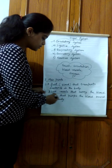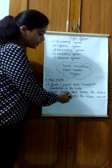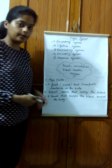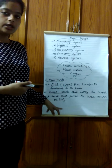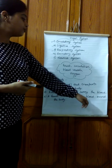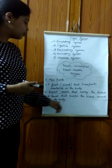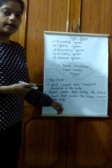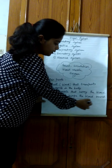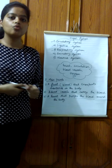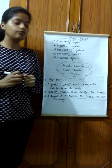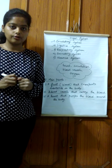Second, blood vessels that carry the blood in our body — blood is transported throughout the body through blood vessels. Third, the heart that pumps blood throughout the body. These are the three main parts of the circulatory system.